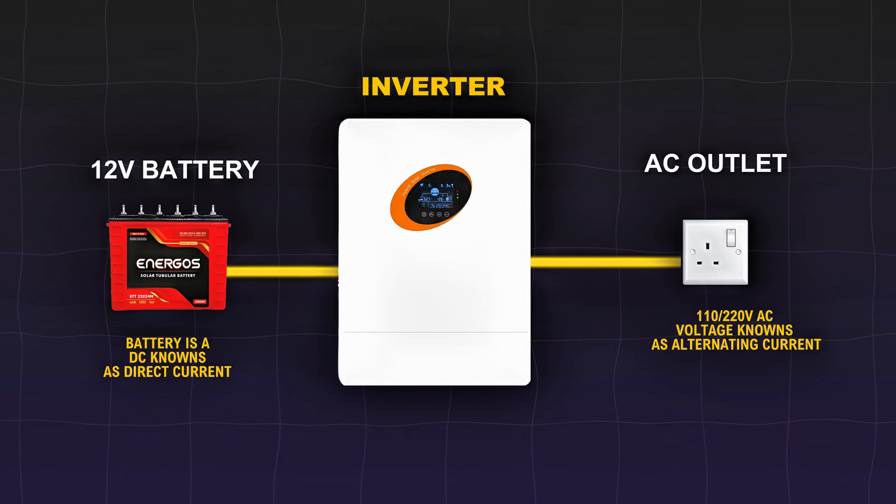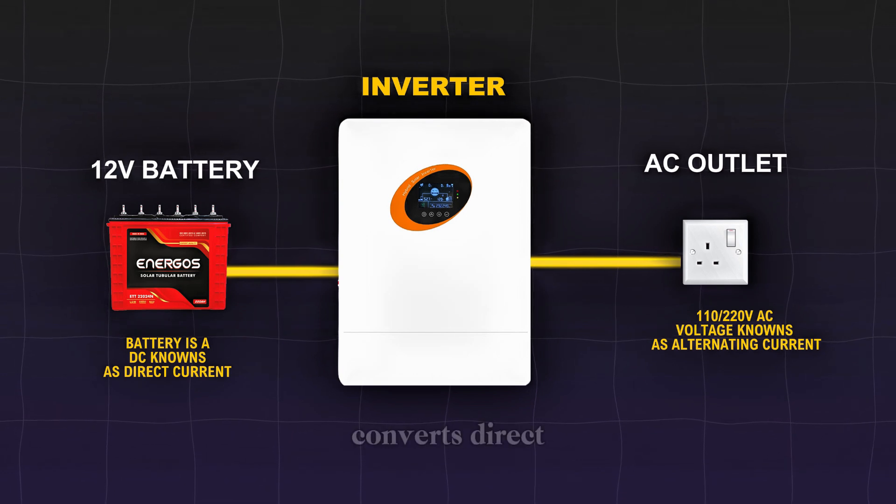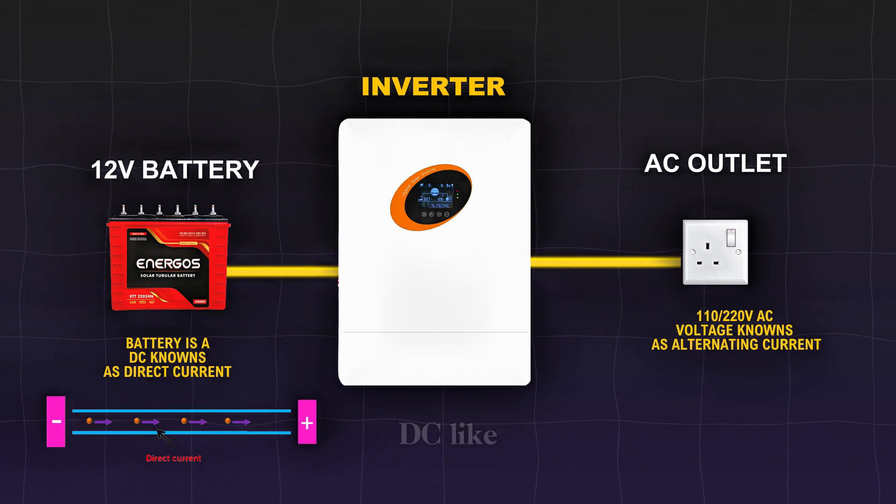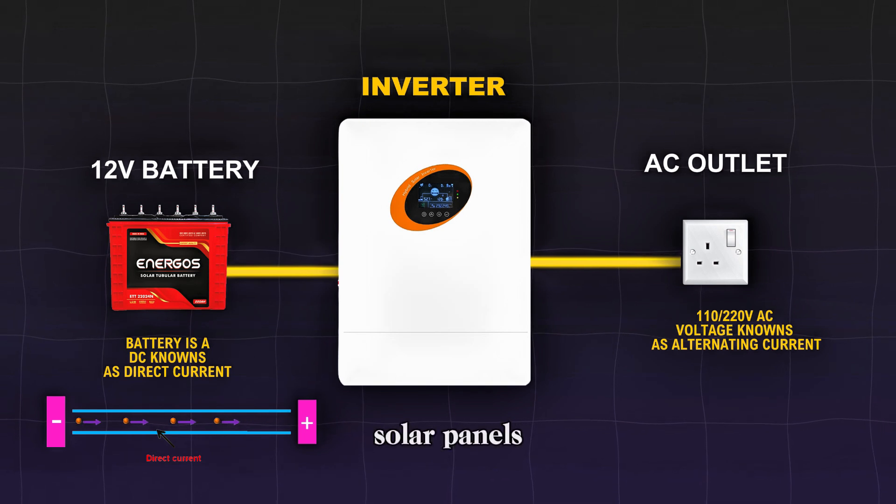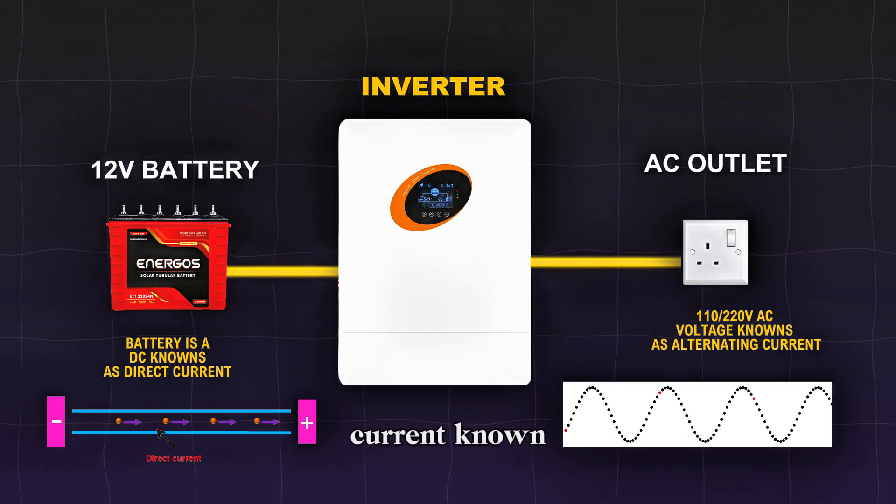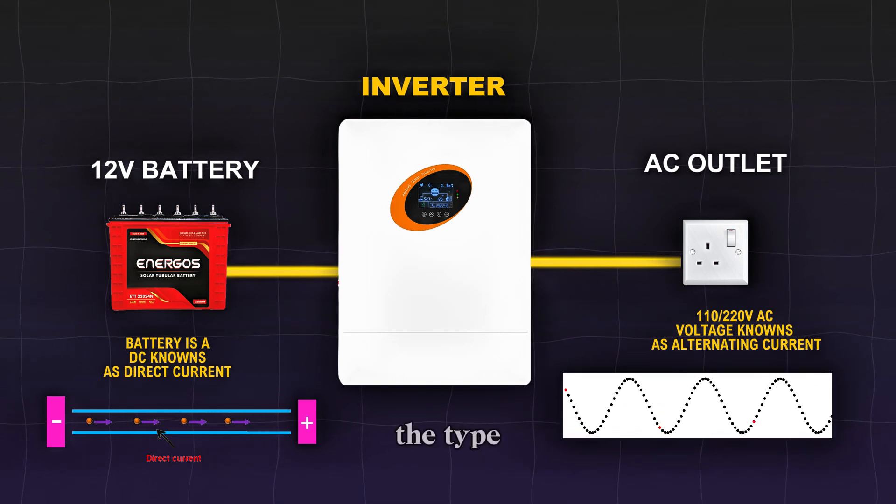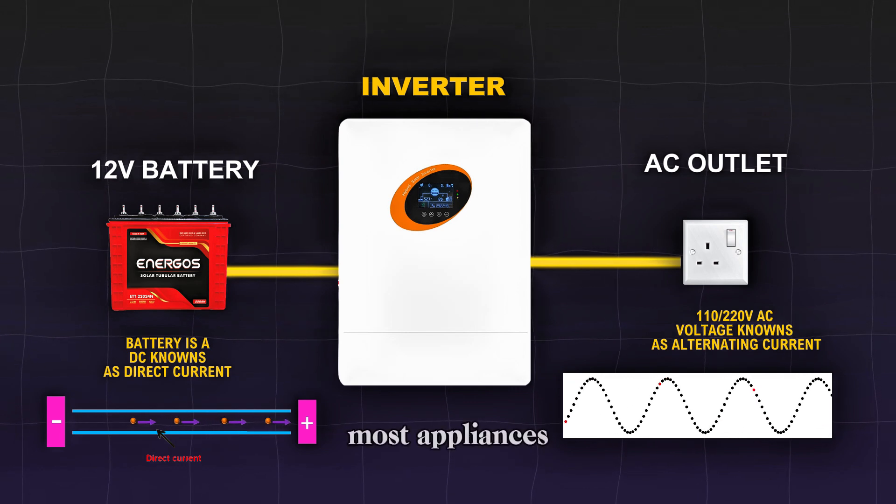With a cool definition, we can say that an inverter converts direct current, known as DC, like current from batteries or solar panels, into alternating current, known as AC, which is the type of electricity used by most appliances and the grid.